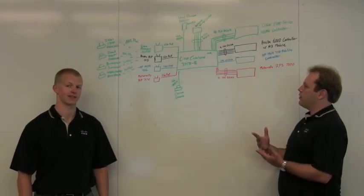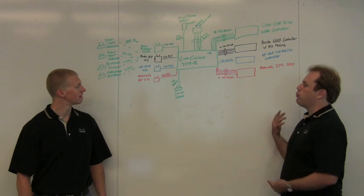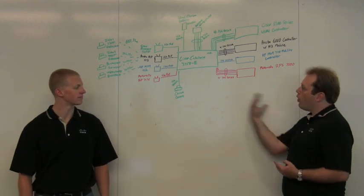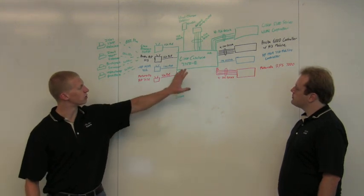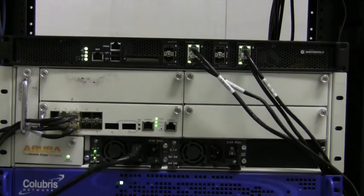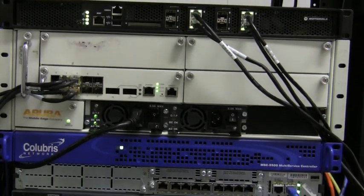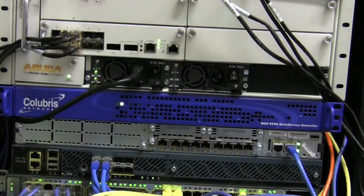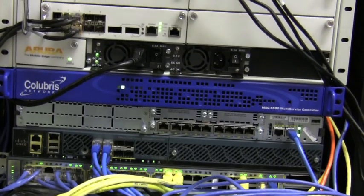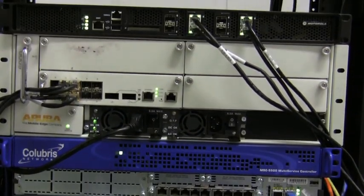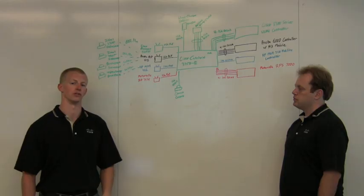So Jameson, it looks like you've got the test bed set up whiteboarded here. Why don't you walk through for the audience what we did here for testing? Absolutely. So here at the edge, we have a controller from each vendor. We have a Motorola RFS 7000, an HP MSM 750, Aruba 6000 controller with an M3 module, and Cisco's 5500 series wireless LAN controller.